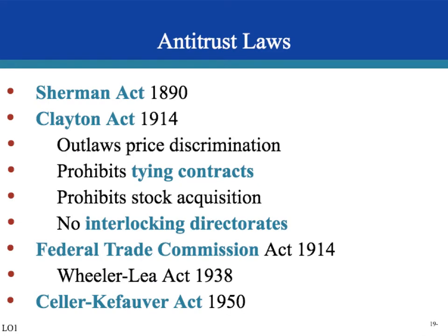The first antitrust act was the Sherman Act of 1890, and it was very broad with only two sections. Section 1 outlawed restraints of trade — anything that made trade harder — such as collusive price fixing, where firms agree on one price, and also prevent monopolization. Section 2 gave the government power to potentially break up monopolies; however, it was very vague, subject to court interpretations, and very hard to prosecute a monopolist under.